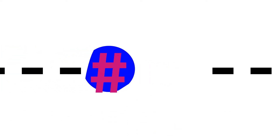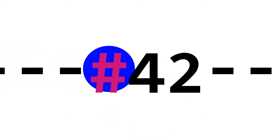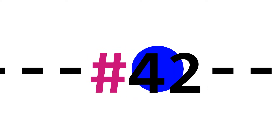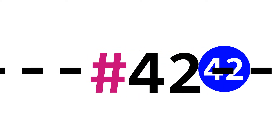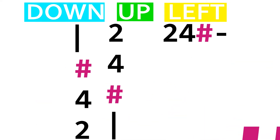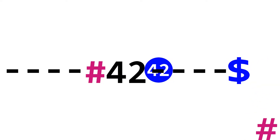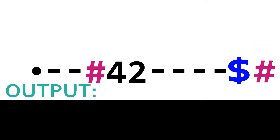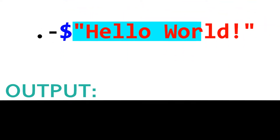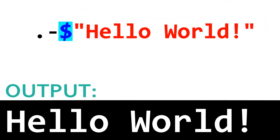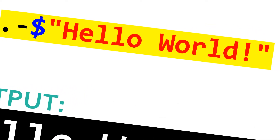To set a dot's value, you'll have it collide with a number sign. What follows it is the new value for the dot, so if the number sign is followed by a 42, the dot would have the value of 42. Since code can run in any direction, this code would need to be rotated based on which direction the dot is moving in. To output the dot's value, you type a dollar sign followed by a number sign, so this program here will output a 42. You are also able to output a string by preceding a string in quotes with a dollar sign. That's how the Hello World program is made.